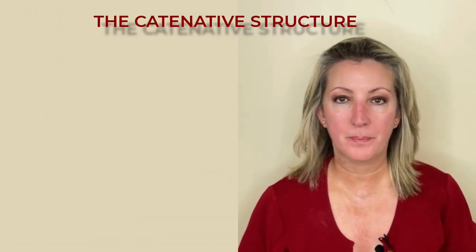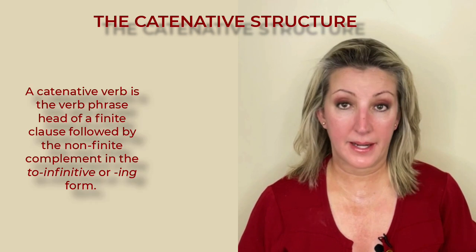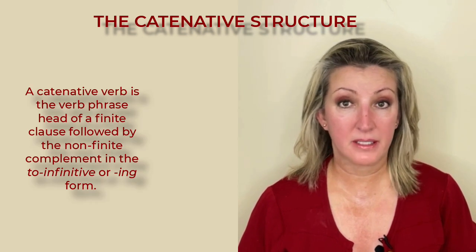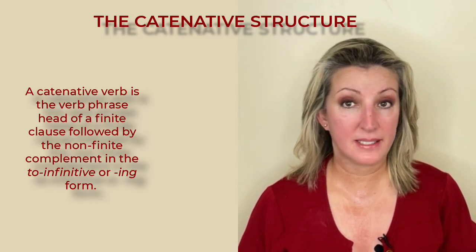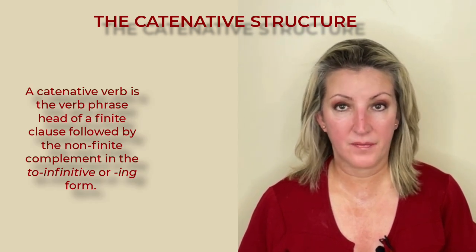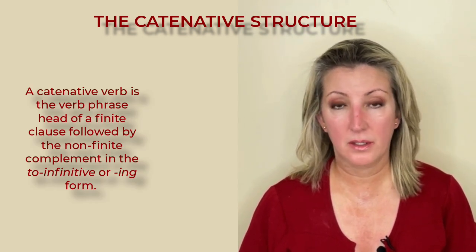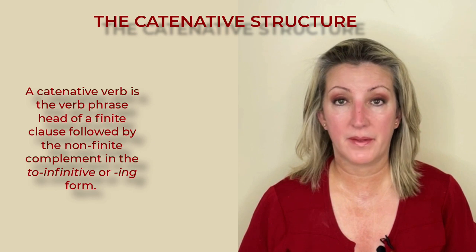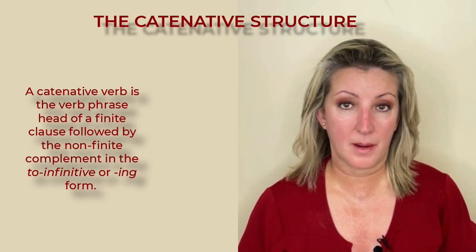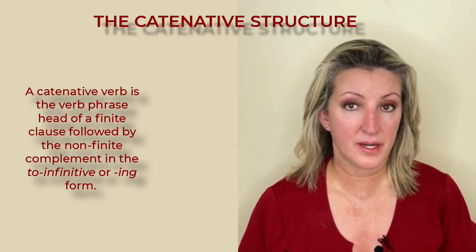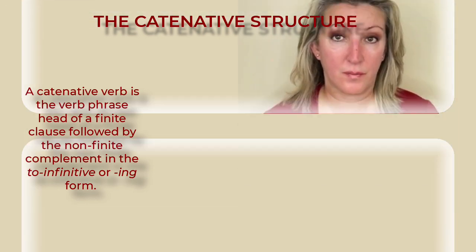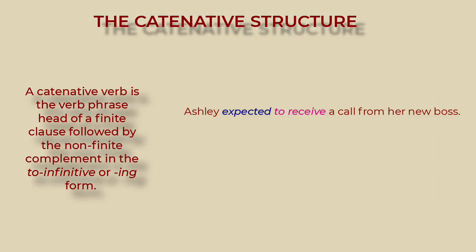How do you form a catenative structure? A catenative verb is the verb phrase head of a finite clause, followed by the non-finite complement in the infinitive or -ing form. Let's look at this sentence.